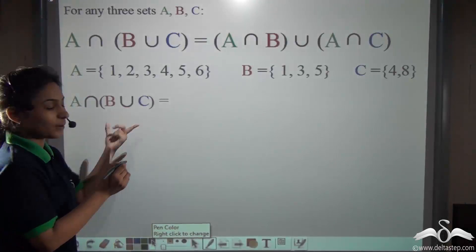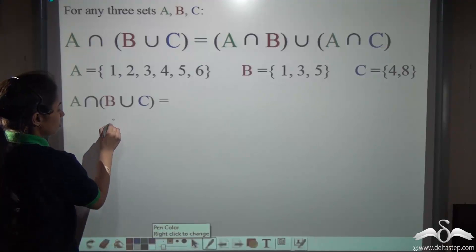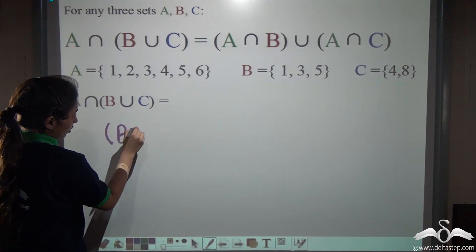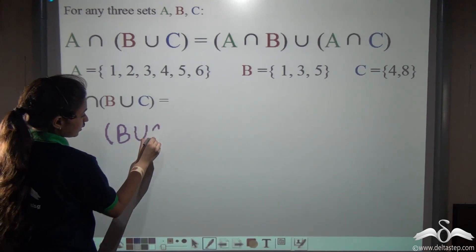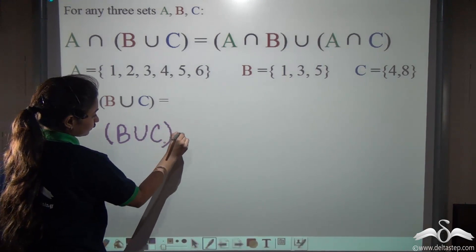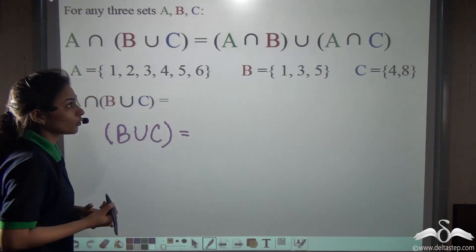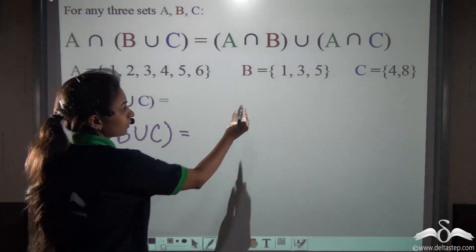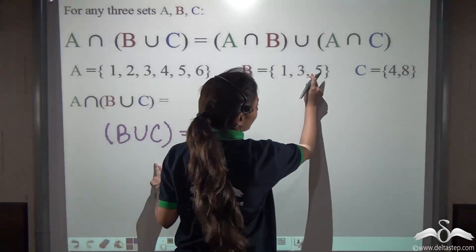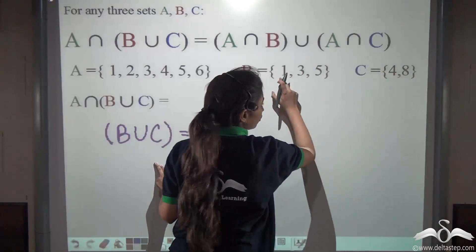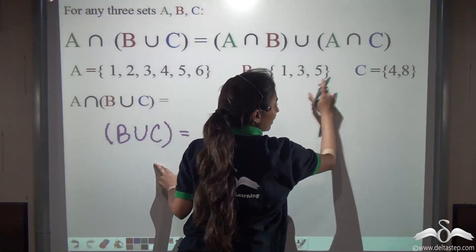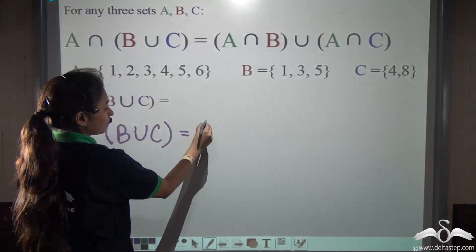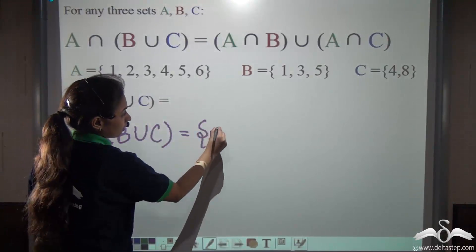First, let's find out the bracket. B union C — what will you get? Write all the elements of B and C together: 1, 3, 5, 4 and 8. We can write all the elements in B union C.